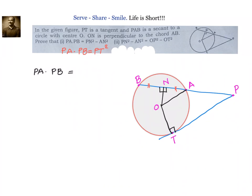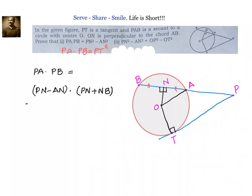So PA equals PN minus AN, and PB equals PN plus NB. Since AN equals BN, we can write PB as PN plus AN. Therefore PA into PB equals (PN minus AN) into (PN plus AN), which equals PN square minus AN square.